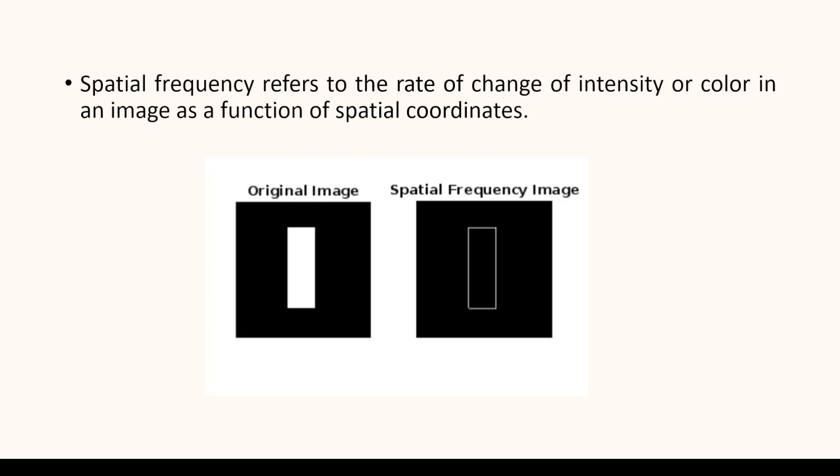Now that we have understood the concept of spatial frequency, here is a representation of the original image and the same in spatial frequency. We see that the rate of change of pixel intensity is clearly visible at the edges of the image — specifically at the edges of the rectangle, where there is a rapid change in pixel intensity.